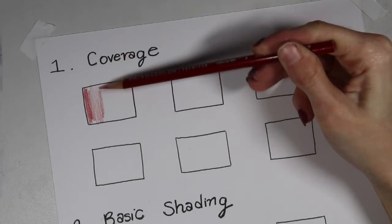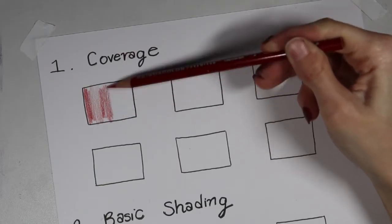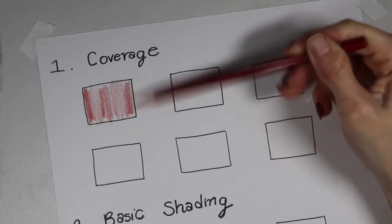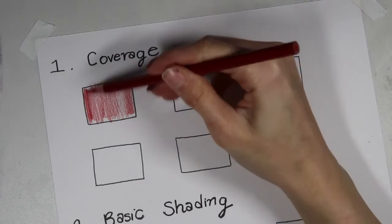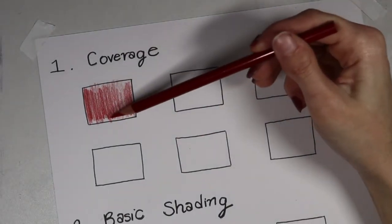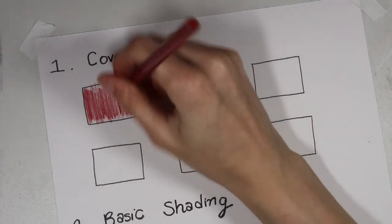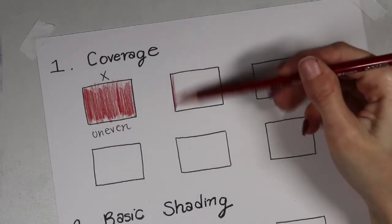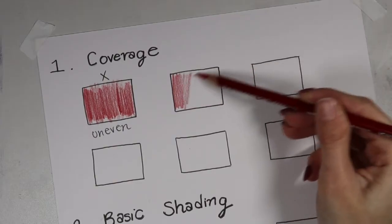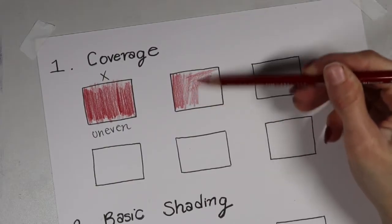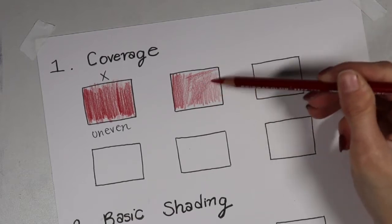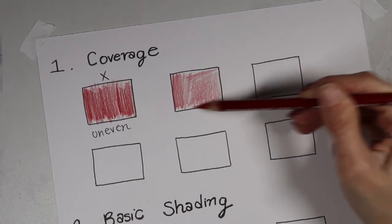First little box here, I'm going to show you what an uneven pencil coverage might look like. If you look closely, you can see these hard pencil marks here, and that's because I was holding the pencil like this and pushing too hard. So another problem with coverage is if you start coloring in multiple directions, even if you're using the same amount of pressure, it's really obvious that you are creating these pencil marks in different directions.